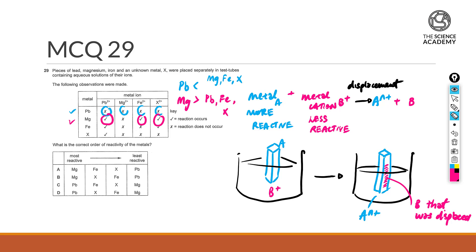So, going over to the third reaction of iron. When placed in Pb2+, there is a reaction, and when placed in X, there is a reaction as well. So this tells me that iron is more reactive than Pb, as well as X.